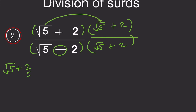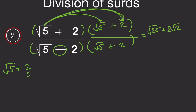Expanding the numerator: root 5 times root 5 gives root 25, which equals 5. Then root 5 times 2 gives 2 root 5, and we also have 2 root 5 from the other term, giving us 4 when multiplied.